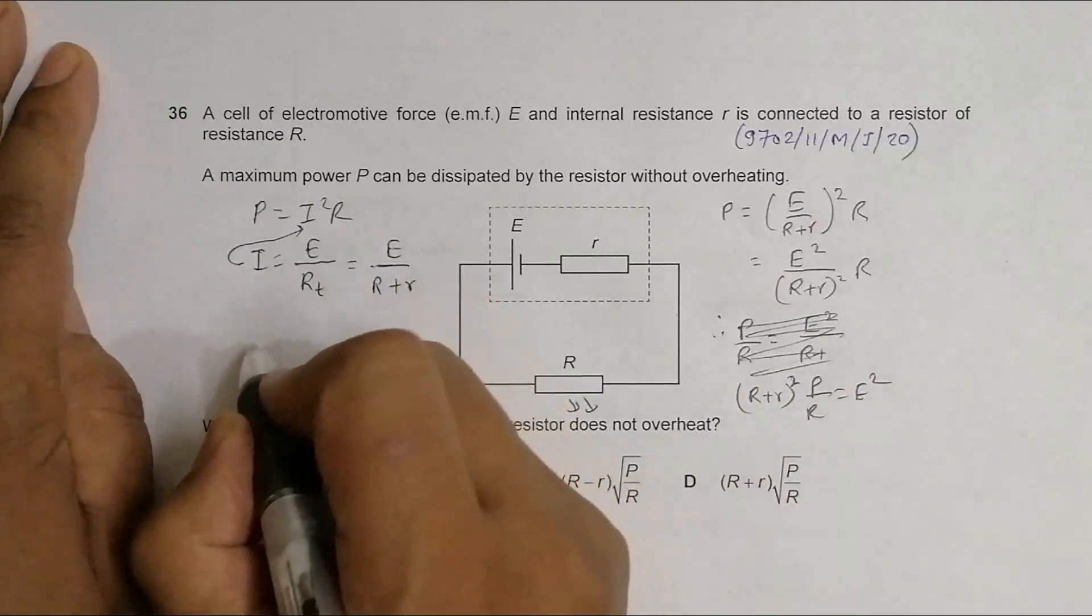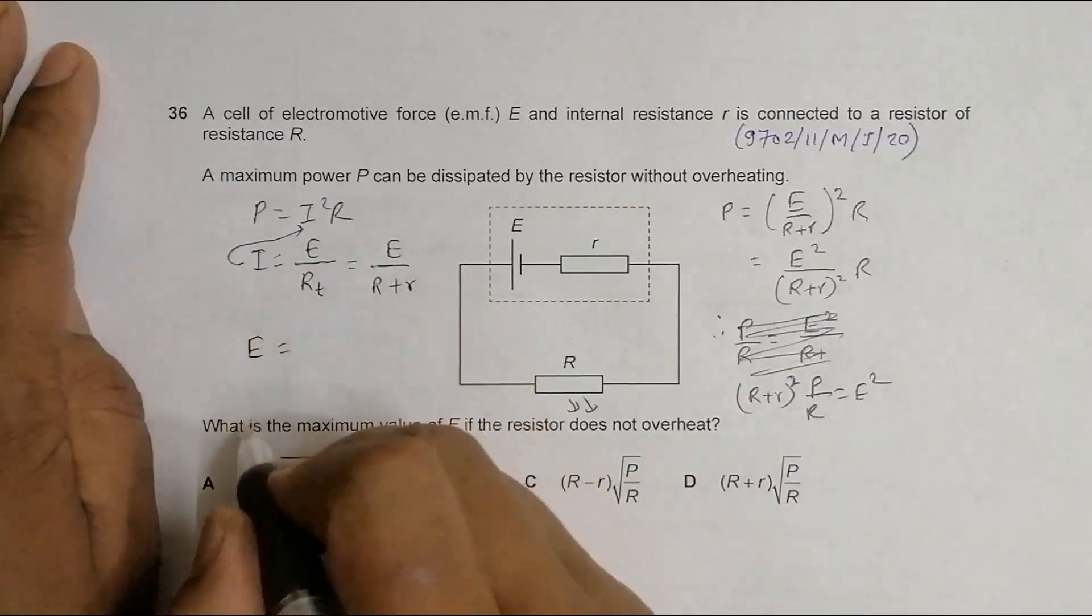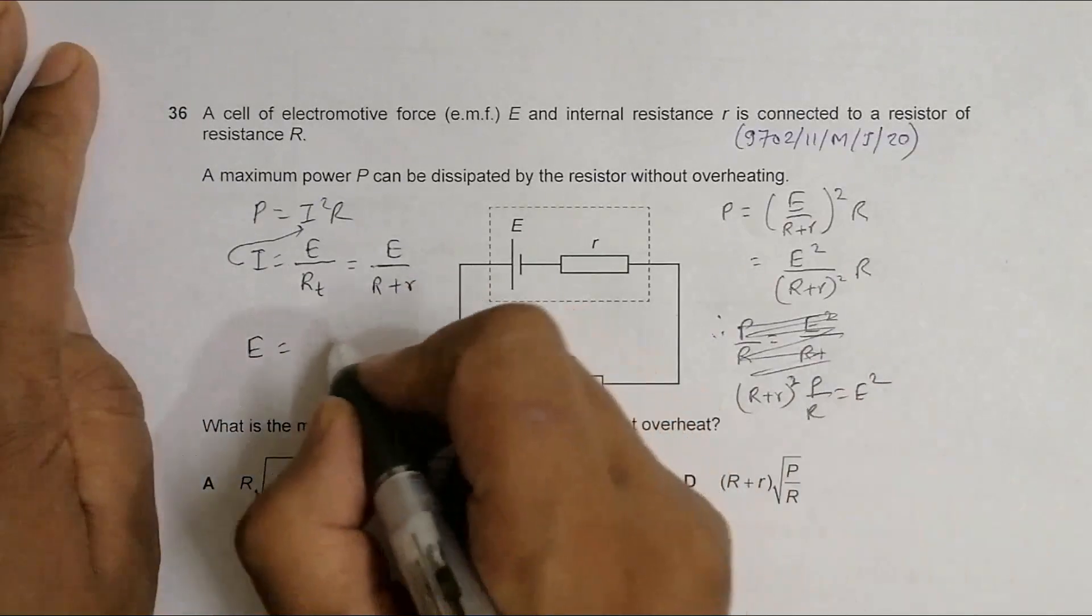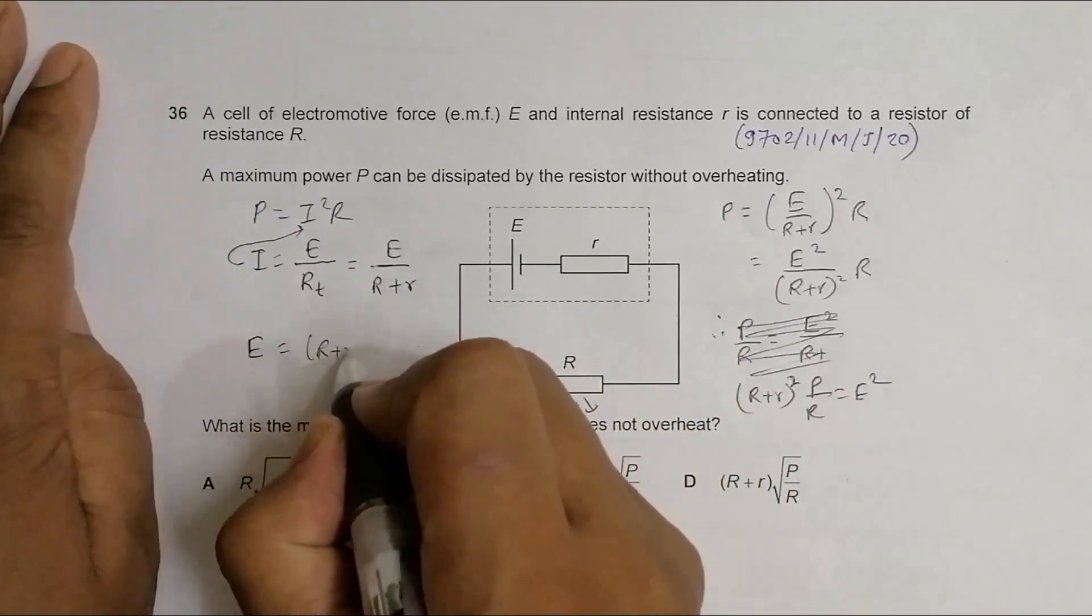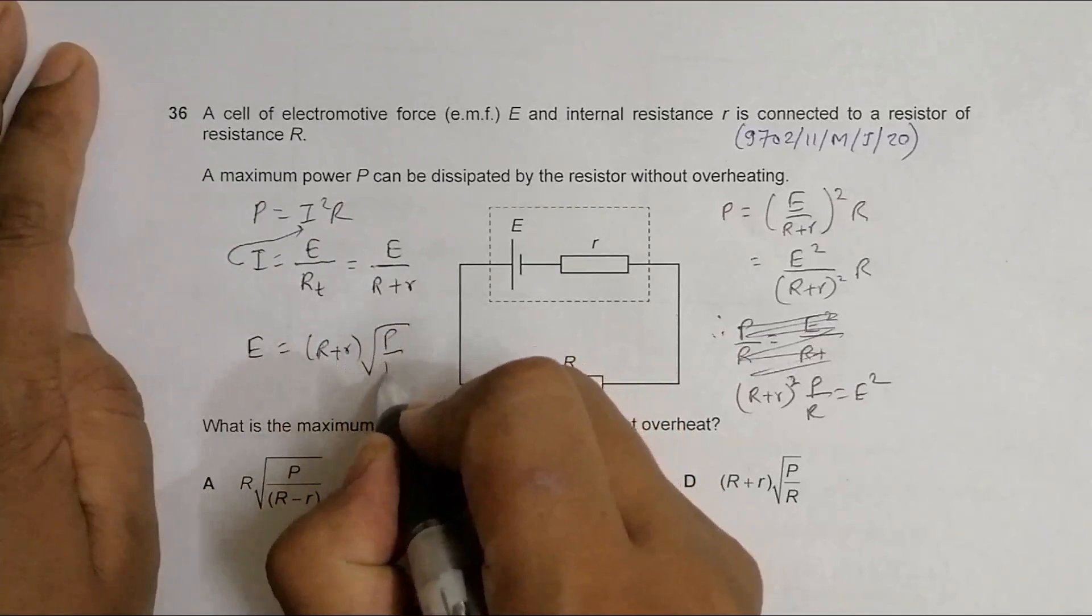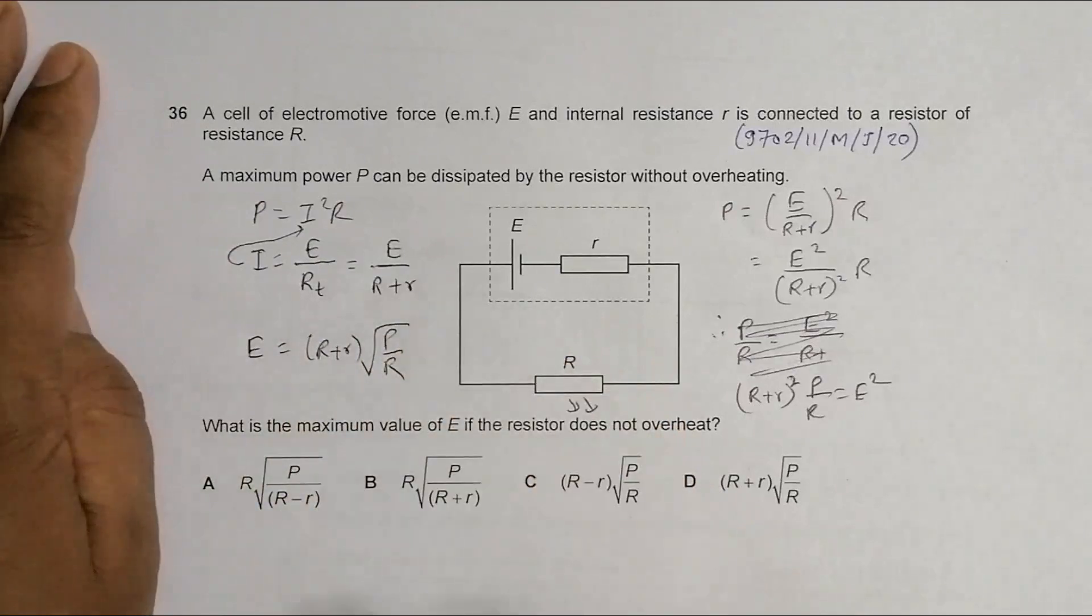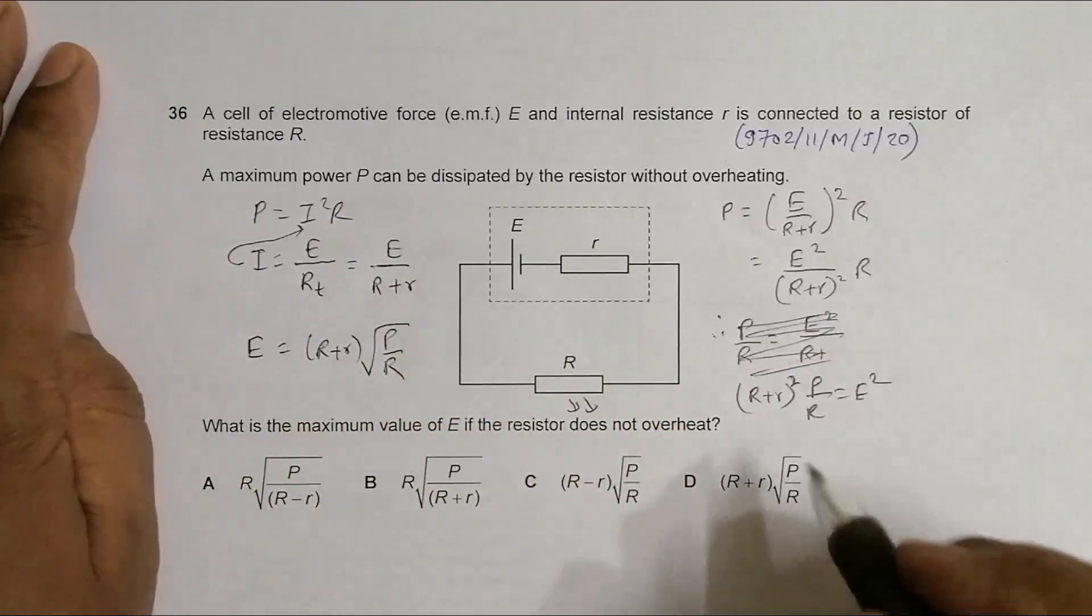From here, if I find E, E will be equal to root of this thing, so it is R plus r times the square root of P by R.